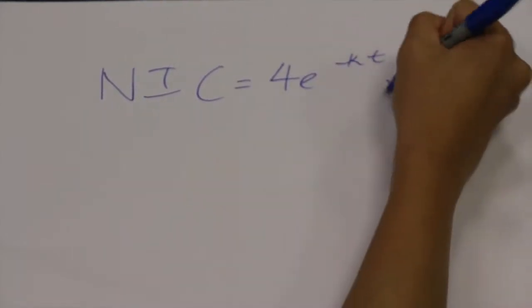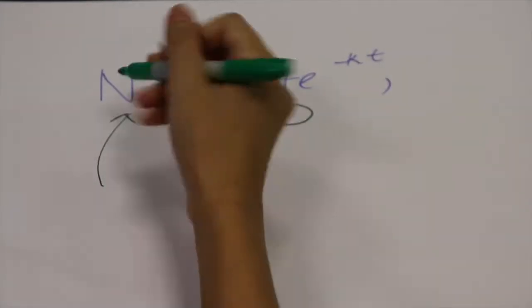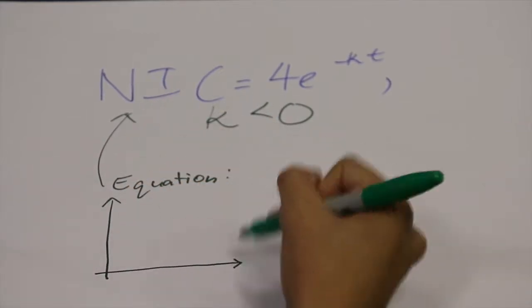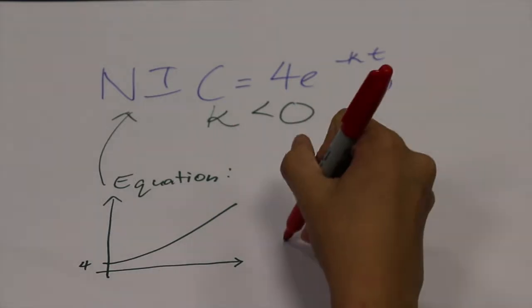The number of non-immune cutworms thus will be 4. The growth of worms is an exponential function as the worms grow at a rate of 10% per day. Hence NIC equals 4e to the power of negative kt.